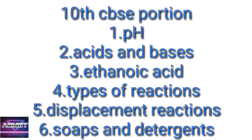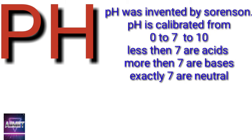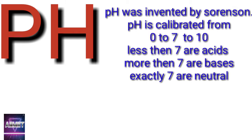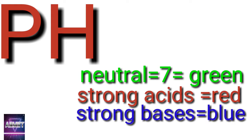Coming to the first practical — pH. pH is defined as the negative logarithm of base 10 hydrogen ion concentration. pH was invented by Sorenson. The pH scale extends from 0 to 14: less than 7 are acids, more than 7 are bases, and exactly 7 is neutral. Neutral is denoted by green color.